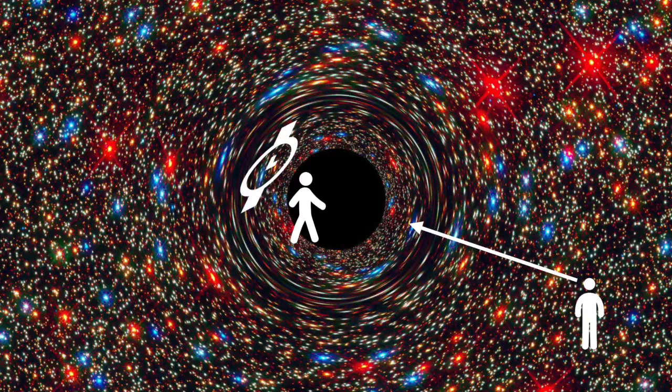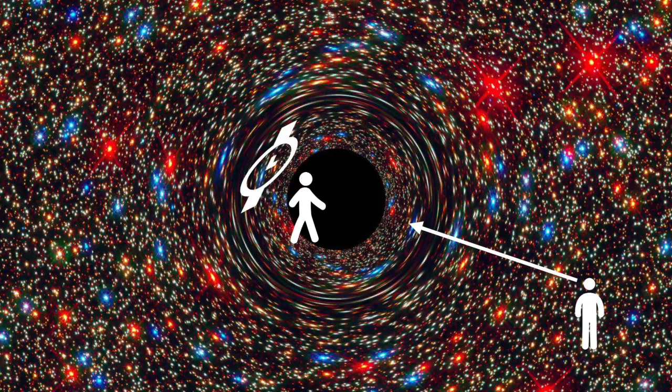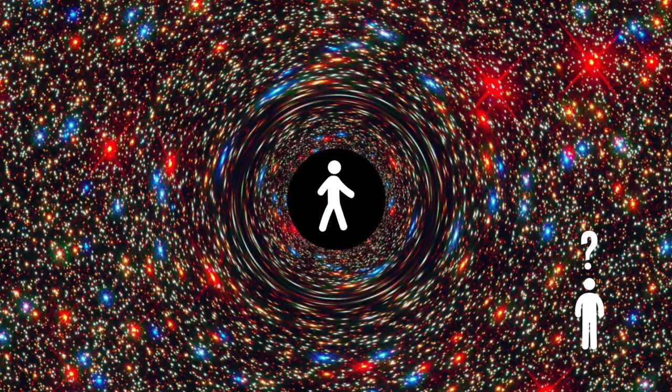However, for the observer outside of the black hole watching you fall into it, it would appear to them that your watch was slowing down as you travel further into the black hole. The centre of the black hole has almost infinite gravity. This will eventually mean that it would appear to them as if time had stopped for you altogether.